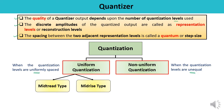Uniform quantization may be further divided into two types: mid-tread type and mid-rise type. The mid-tread type is also known as a symmetric quantizer, and the mid-rise type is also a symmetric quantizer. In the mid-tread type, the origin lies in the middle of the tread of the staircase-like graph, while in the mid-rise type, the origin lies in the middle of the rising part of the staircase-like graph.